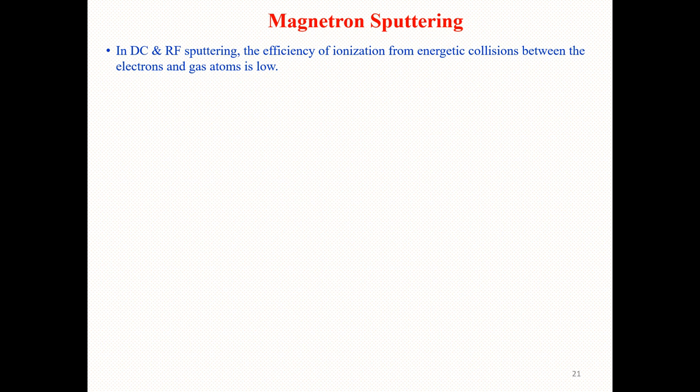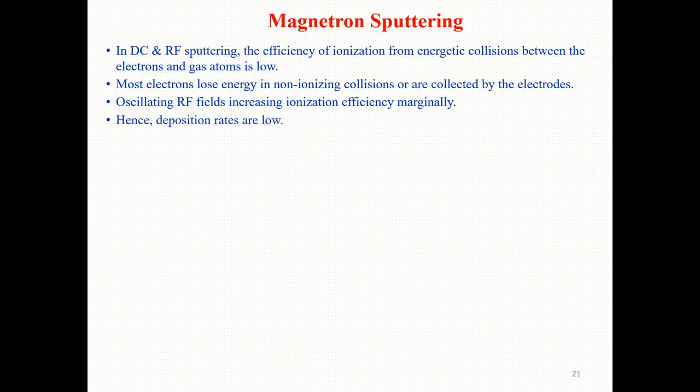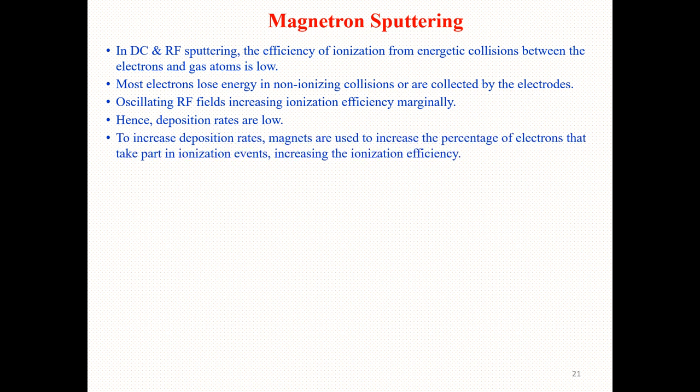Last time, we were discussing DC and RF sputtering. We learned that in the case of DC and RF sputtering, the efficiency of ionization from energetic collisions between the electrons and the gas atoms is low. As a result, most electrons lose energy in non-ionizing collisions and are collected by the electrode. We noted that an oscillating RF field increases ionization efficiency only marginally, hence deposition rates are low.